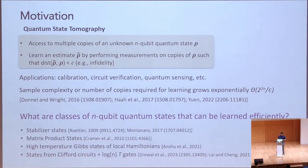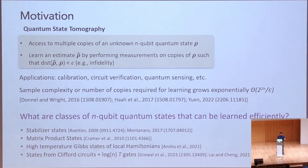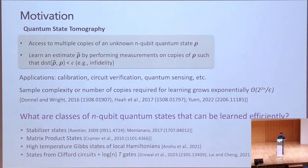We know some examples. For instance, stabilizer states — states produced by Clifford circuits on the all-zero state — as well as matrix product states and high-temperature Gibbs states. It was shown recently that even states from Clifford circuits with a logarithmic number of T gates can be learned efficiently. Now we're going to look at another class of quantum states called phase states, motivated by looking at a subclass of stabilizer states called graph states.